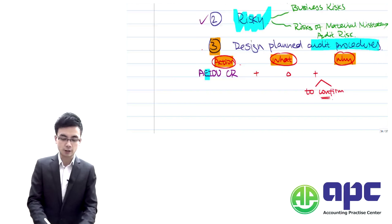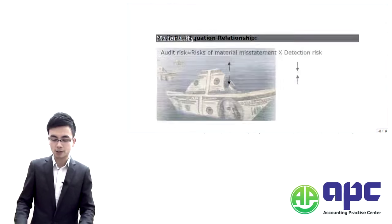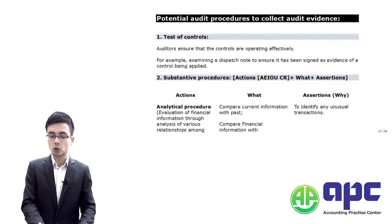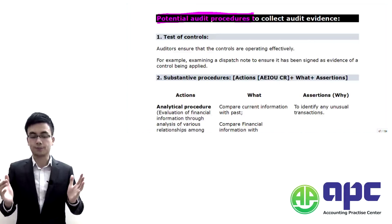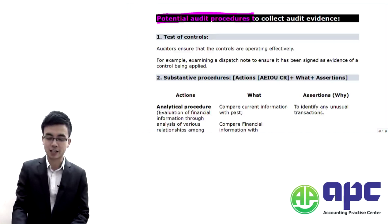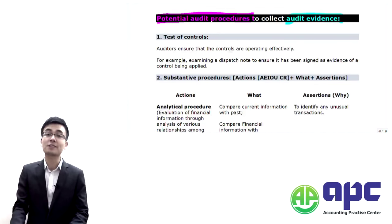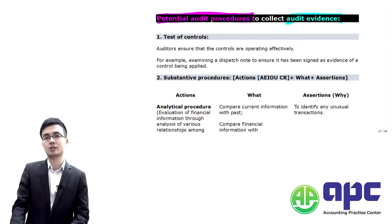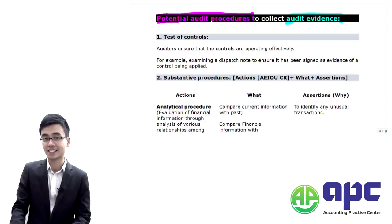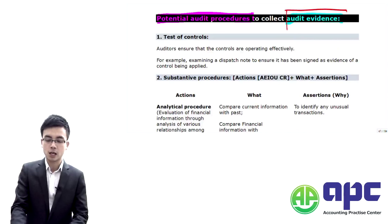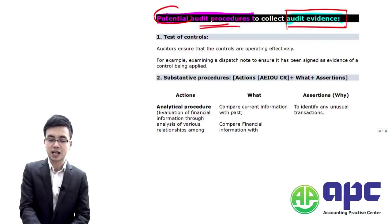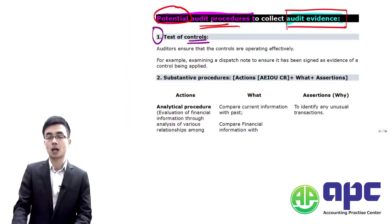Let's look at the examples in your study notes for planned audit procedures. The potential audit procedures are used to collect audit evidence. We need audit evidence in place — otherwise we cannot defend ourselves in court if the client sues us, and we use working papers to train new auditors. There are two main ways to use planned audit procedures: we can test the controls within the client's system, or we can use substantive testing procedures.